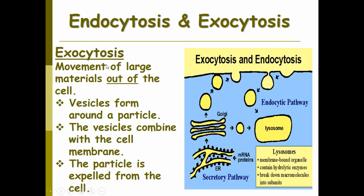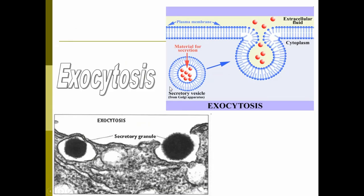Exocytosis is when you move large material out of the cell. The vesicle forms around a particle, combines with the cell membrane, and pushes it out. For example, if you want to excrete a hormone, your body makes the hormone, brings it to the surface, and releases it into extracellular fluid. Extracellular fluid is any fluid between your organs, like between your heart and lungs, or between your cytoplasm and your organelles.